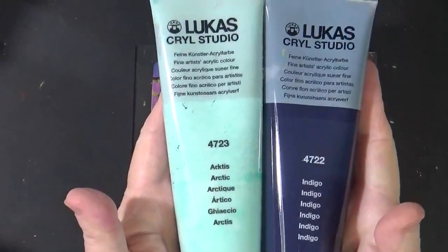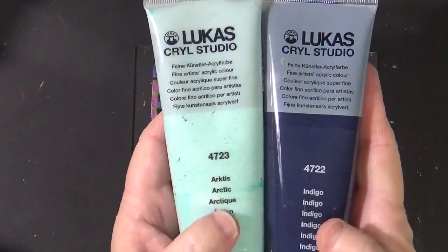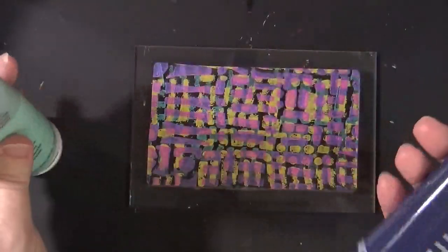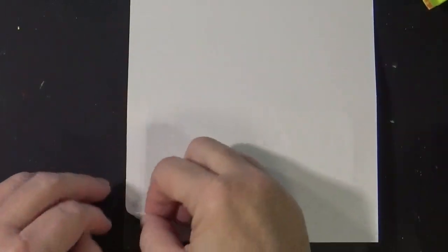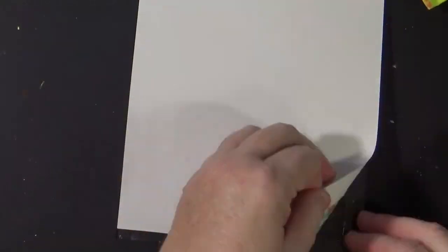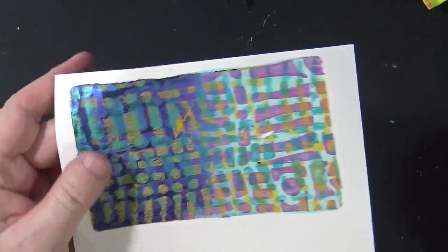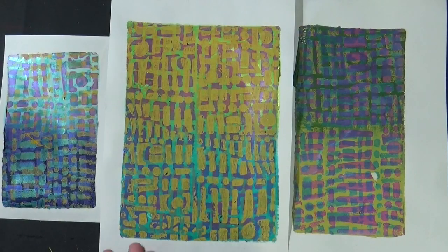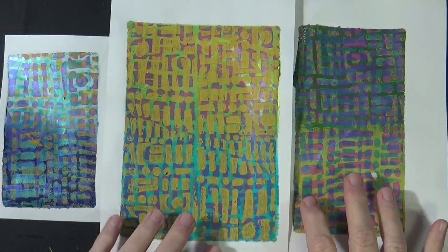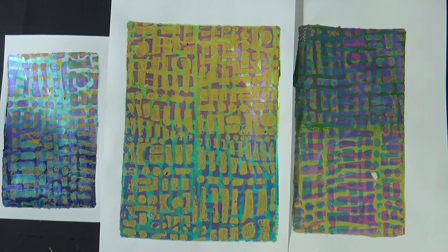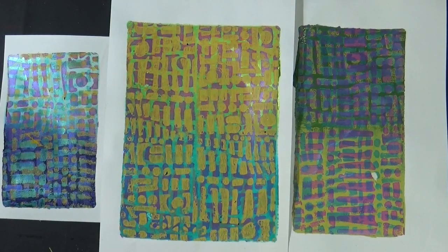This little one, let's pull with Lucas Krill Arctic and Indigo. That's a pretty nice looking print. Let's review what we did. We talked about how a small plate can be just as efficient and it can be just as exciting as a large plate.